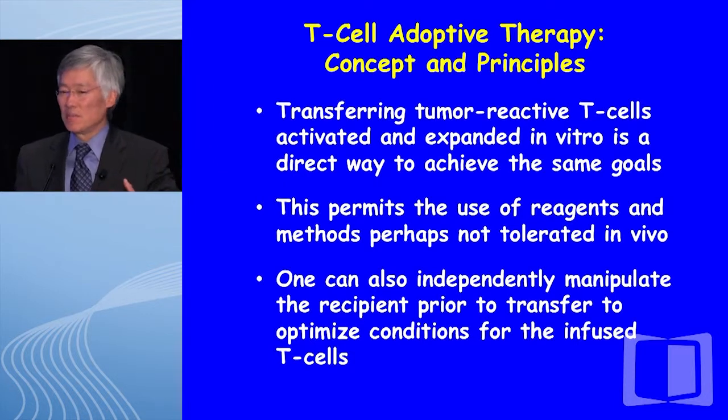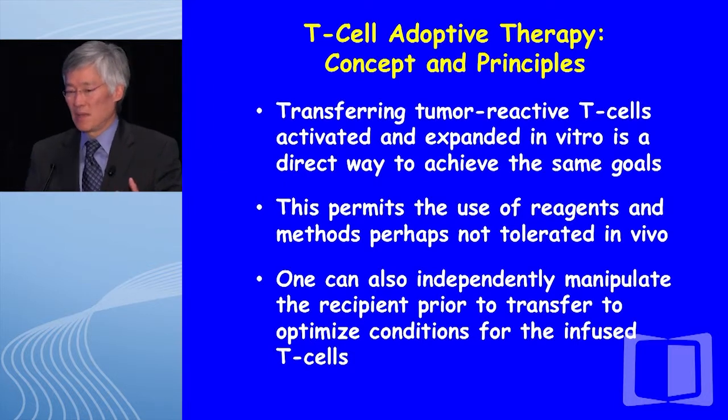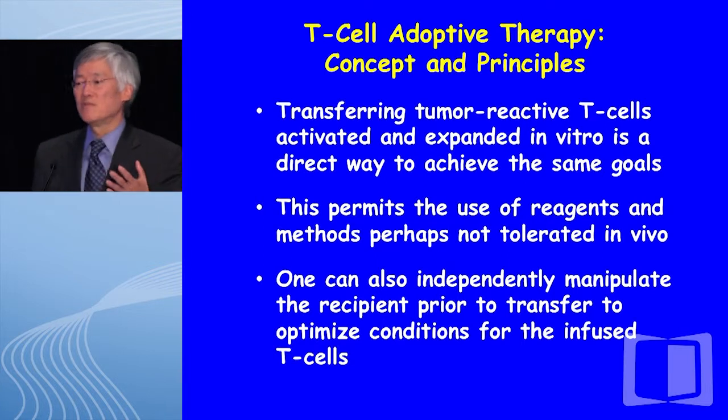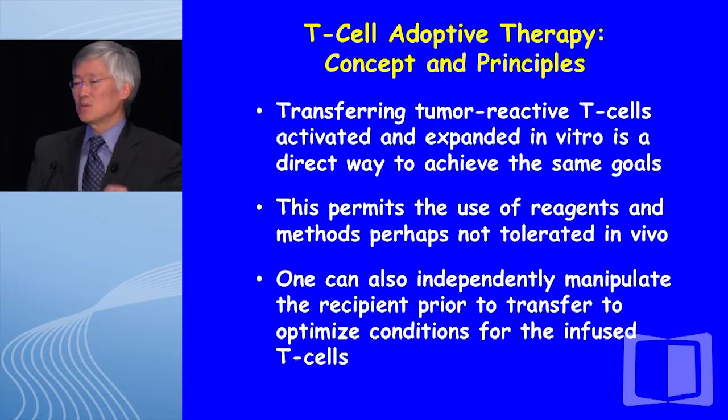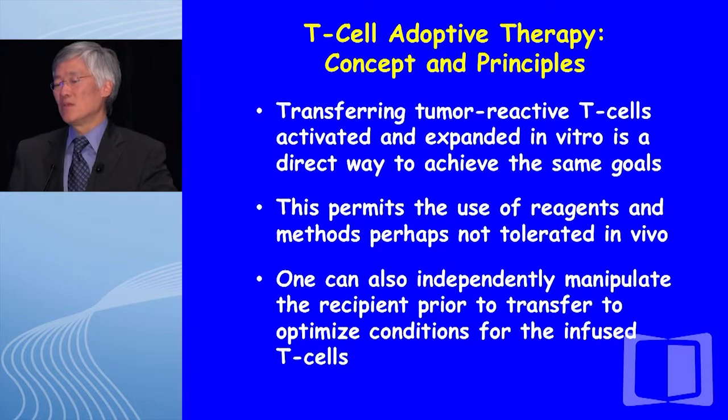It permits the use of reagents that human beings will not be able to tolerate in many cases — you can use in vitro things you can't use in vivo. You can also independently manipulate the recipient apart from their T-cell repertoire components so as to optimize the environment into which the T-cells are put. This allows a lot of freedom where you don't have to impair the T-cell agonist arm while preparing the recipient.